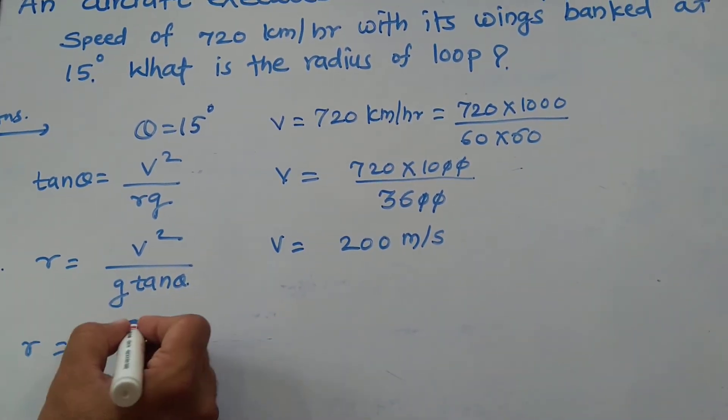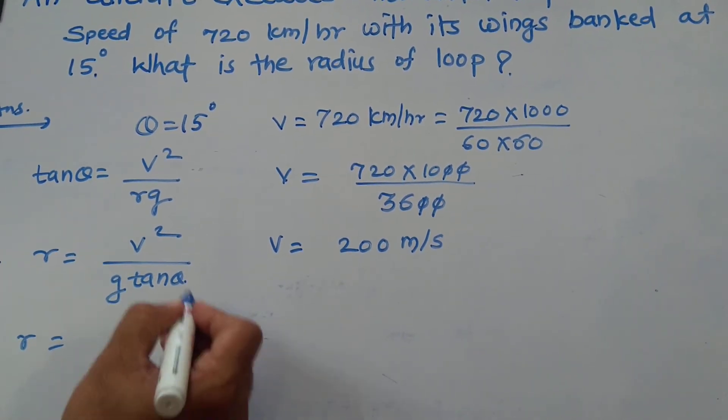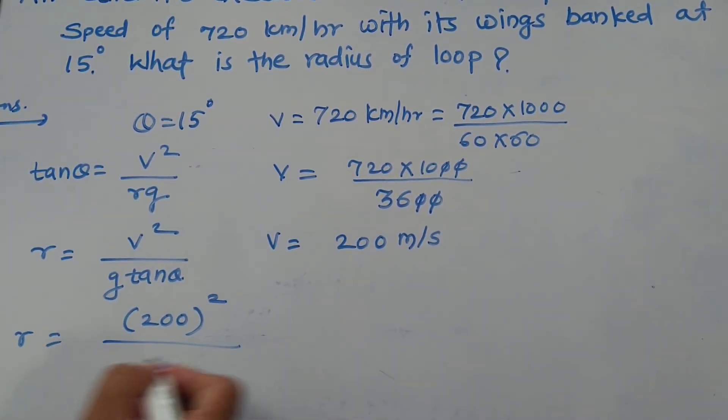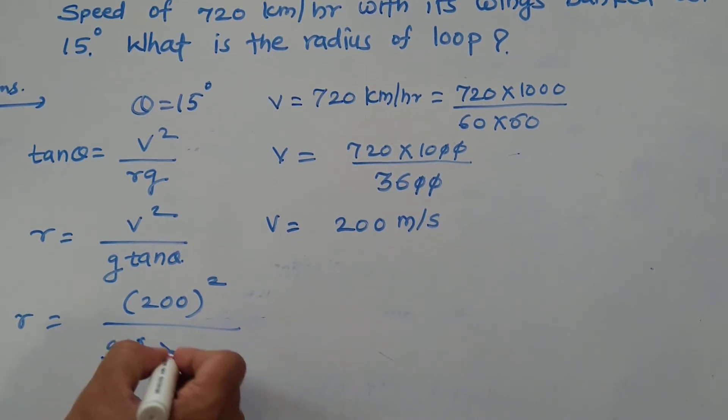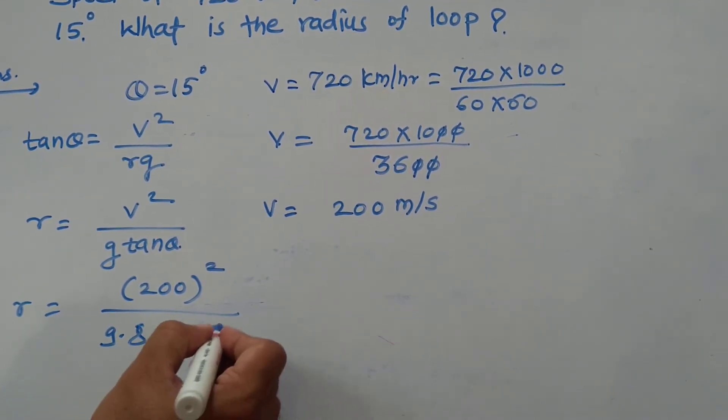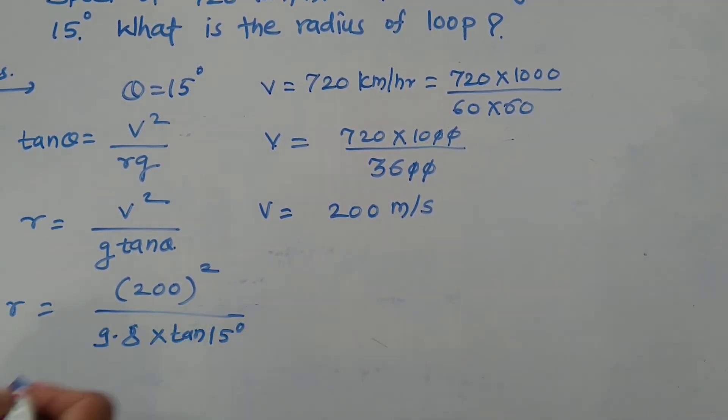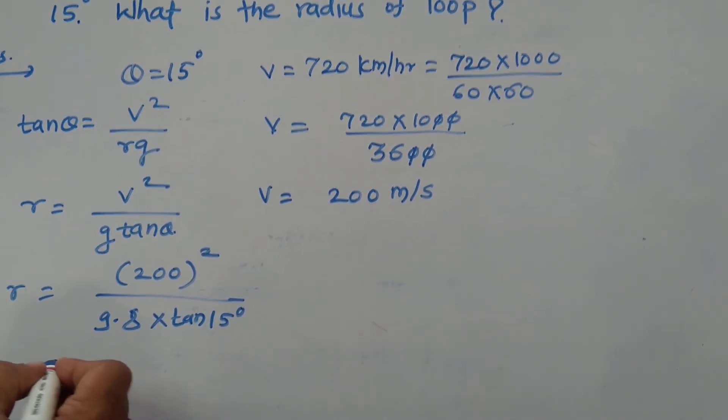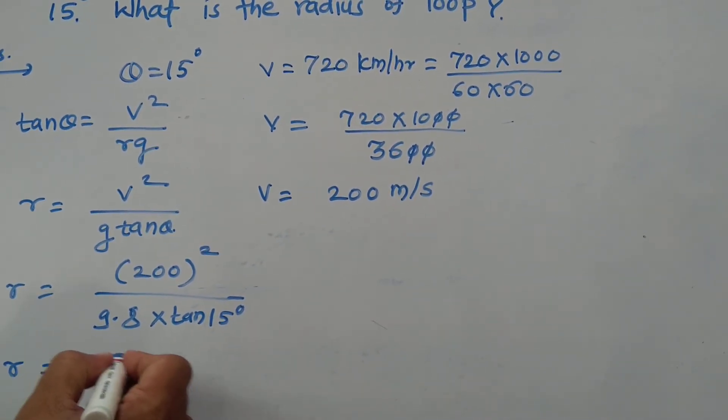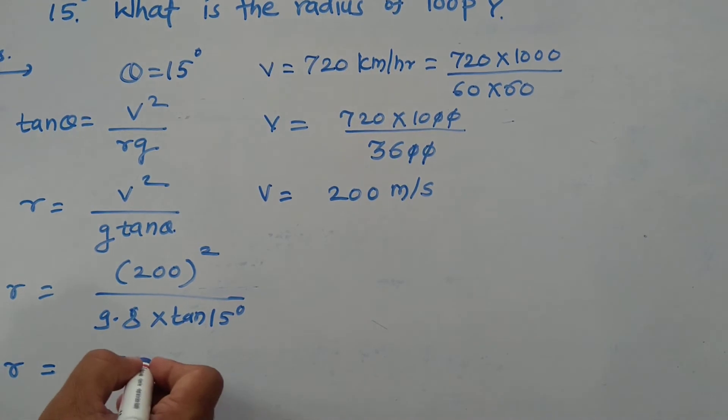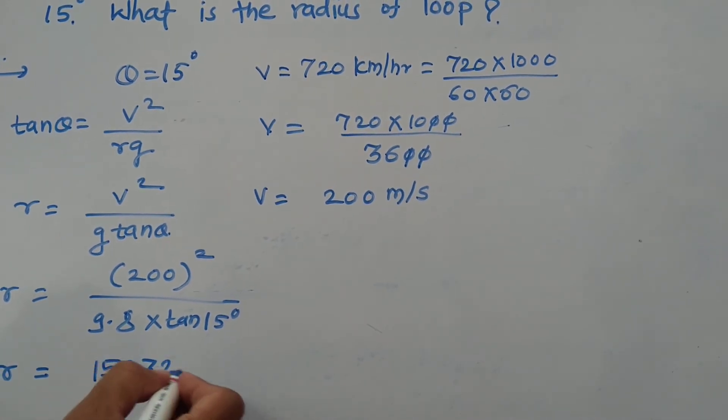Therefore R equals 200 squared, and G is 9.8 into tan 15 degrees. After calculating this, we get R equals 15,232 meters.